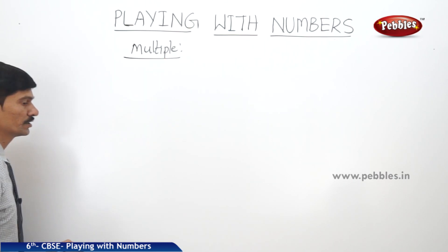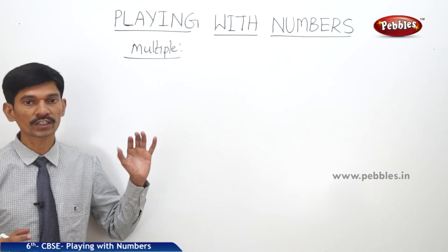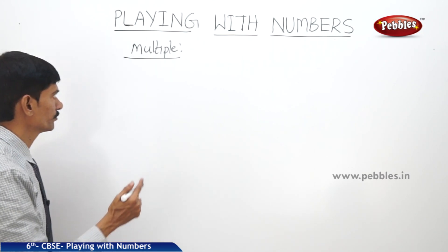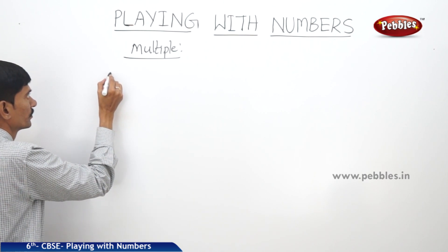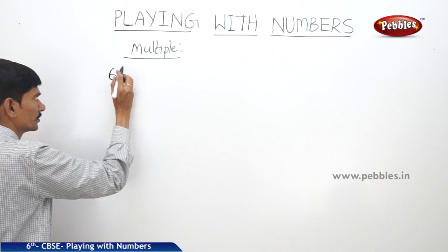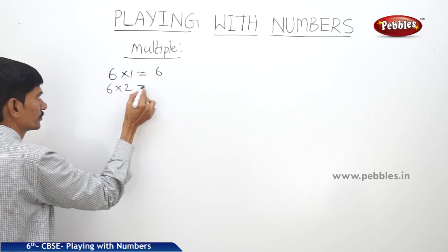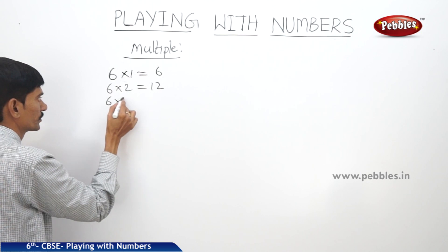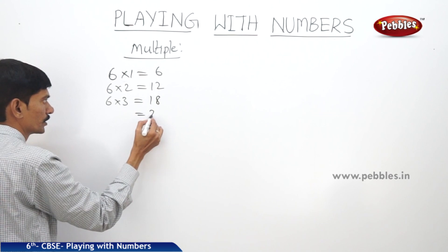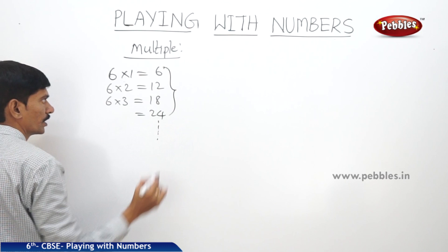If you multiply any given number by the natural numbers one, two, three, four, and so on, the products obtained are called the multiples of the given number. For example, to find the multiples of six: six multiplied by one is six, multiplied by two is twelve, multiplied by three is eighteen, and multiplied by four is twenty-four. All these numbers are called the multiples of six.